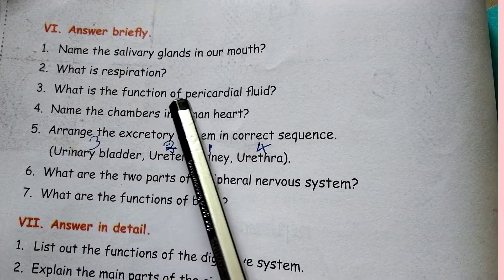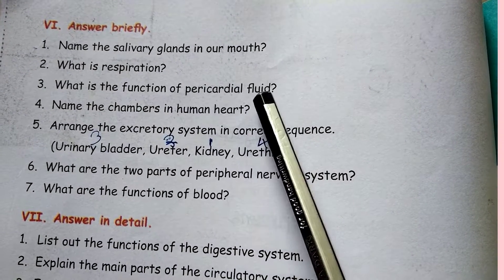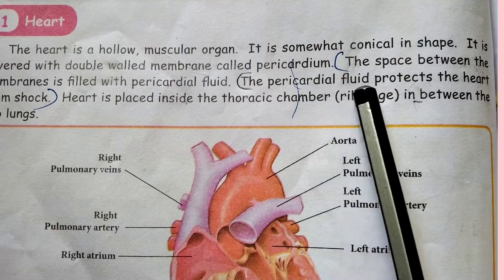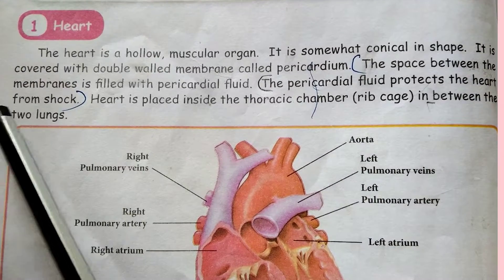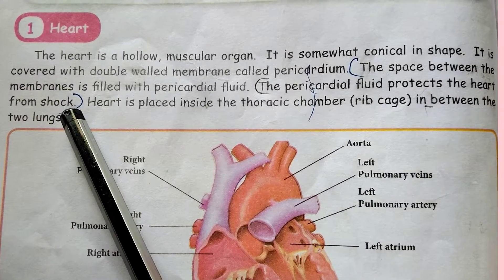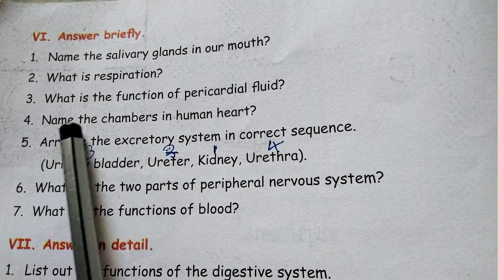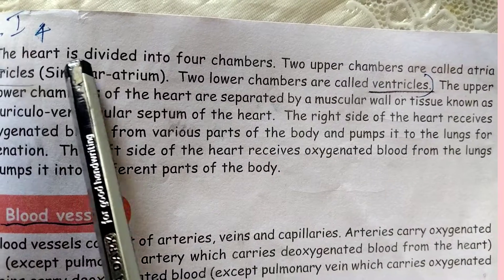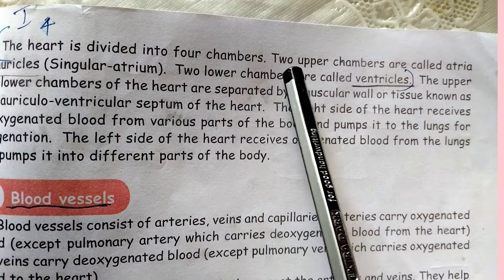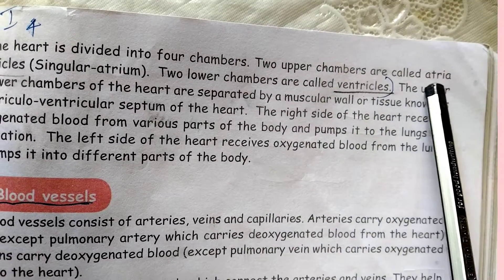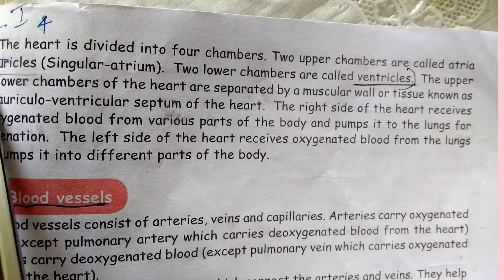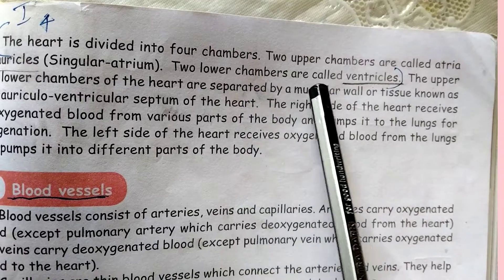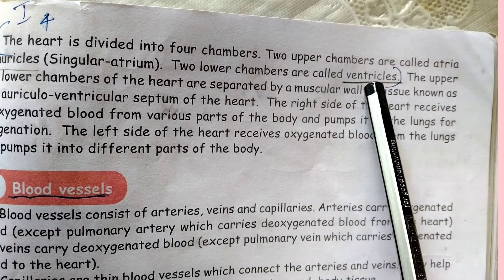What is the function of pericardial fluid? The pericardial fluid protects the heart from shock. Name the chambers in the human heart. The heart is divided into four chambers. The two upper chambers are called atria or auricles, and the two lower chambers are called ventricles.